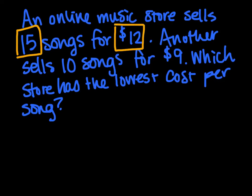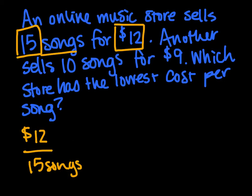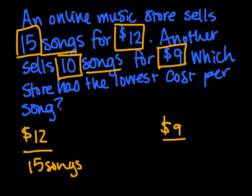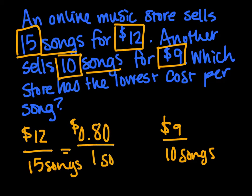We have, let's do sort of our cube method. We have 15 songs for $12. So 15 songs for, well, let's actually do this. We need to know cost per song. So we need to have the $12 on top versus 15 songs. And we need to compare that to another store or another online company that sells songs for $9 per 10 songs. So let's do the math. So $12 for 15 songs ends up being about $0.80 for one song.